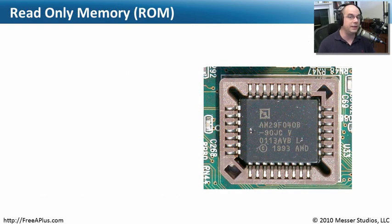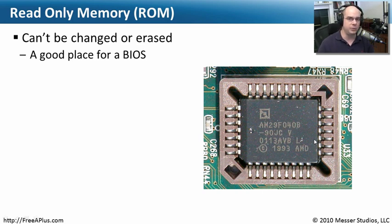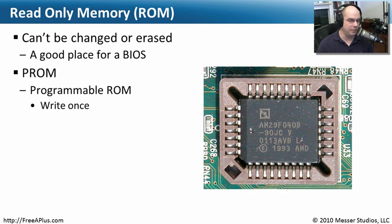Another type of memory you'll encounter is read-only memory. As the name implies, it is typically written once. This is where you'd normally find the BIOS — here's a BIOS chip from one of my older motherboards. It's read-only memory; I can't change what's on it. When you power off the computer, it does not lose its contents — it is very static in the way it operates. Whenever you turn the computer on, the BIOS is always there and available, which is critical because the computer needs to know what to do the moment power is applied.